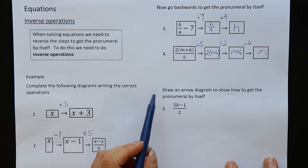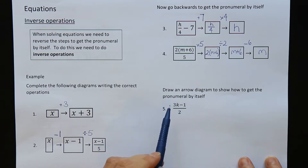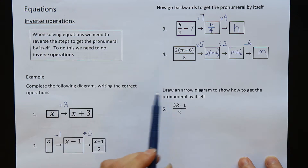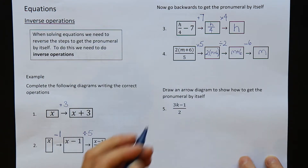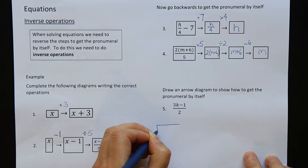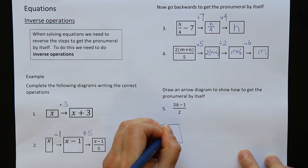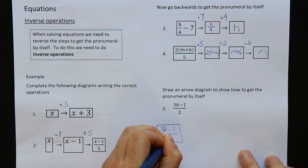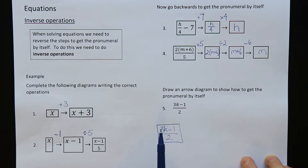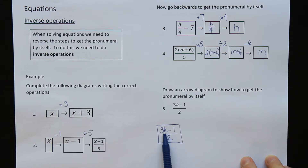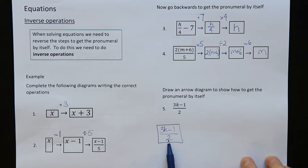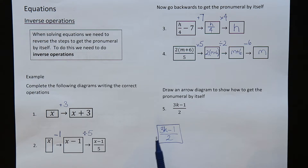One final question down here: draw an arrow diagram to show how to get the pronumeral by itself. So we have to draw one of these diagrams here all on our own. Our first box is what we're starting with: (3k minus 1) over 2. If I start with k, k is multiplied by 3, then the 1 is subtracted, and then all of that is divided by 2. So in reverse, it's going to have to be the 2, then the 1, and then the 3 as I go backwards through my steps. So I'm going to need 3 boxes for the 3 numbers.